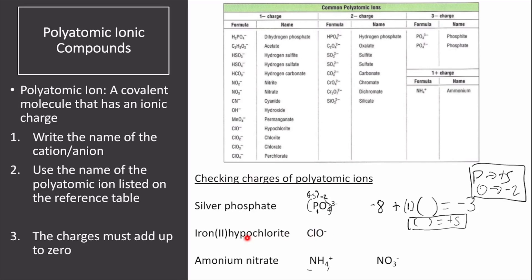The next one is the hypochlorite ion. We put parentheses around it — oxygen has a negative 2 charge, and there is a 1-to-1 ratio of chlorine to oxygen. Multiplying 1 oxygen atom times negative 2 gives negative 2. Adding 1 atom of chlorine times an unknown oxidation state must equal a negative 1 net charge, so that number must be positive 1. Chlorine has a charge of positive 1 and oxygen has a charge of negative 2.